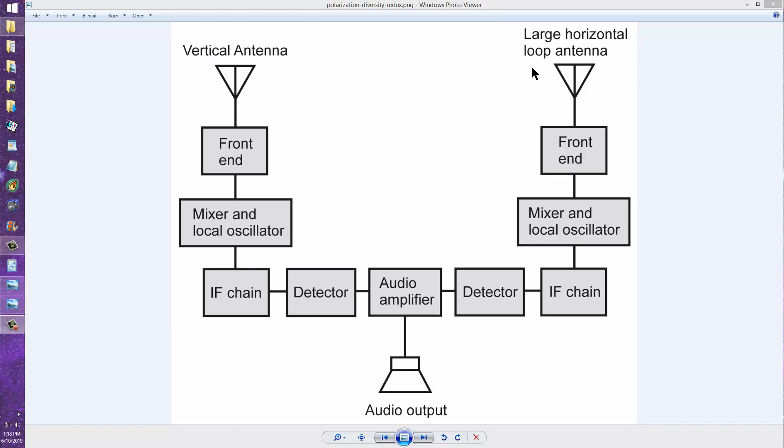Now a large horizontal loop is at least several wavelengths in circumference, so that its polarization will be horizontal and it will be more or less omnidirectional. It will also offer a certain amount of diversity reception because of its sheer size in wavelengths, so it offers that advantage too.